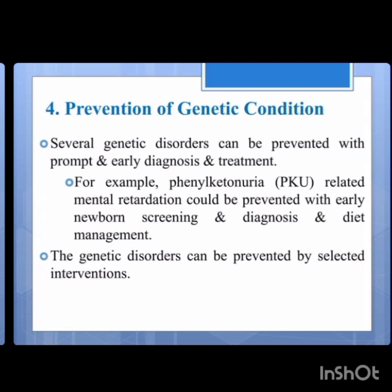Prevention of genetic conditions: several genetic disorders can be prevented with early diagnosis and treatment. For example, phenylketonuria, which is an autosomal recessive disorder — in this condition, ketone bodies and phenylalanine accumulate in the blood and can be deposited in brain tissue, leading to mental retardation. If we can find out this disease condition at the earliest stage in the newborn, we can give medication, manage with diet, and prevent mental retardation in that child. Early diagnosis and treatment are very important for genetic disorders.